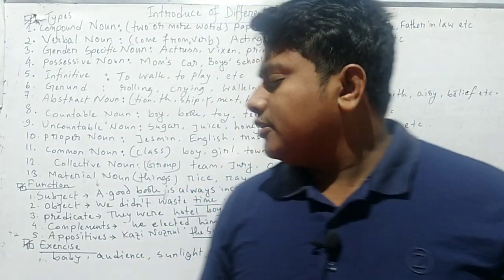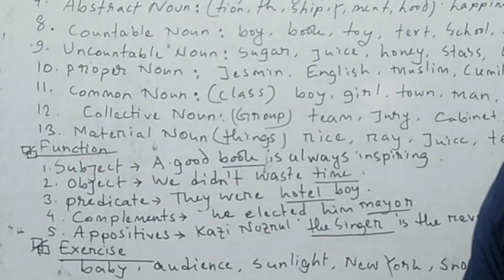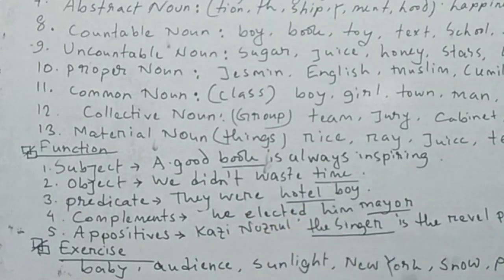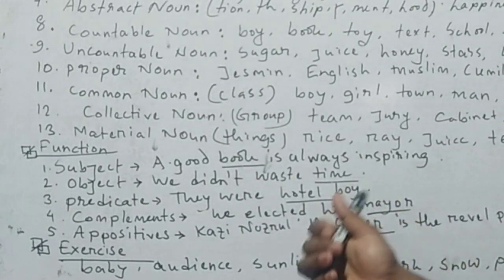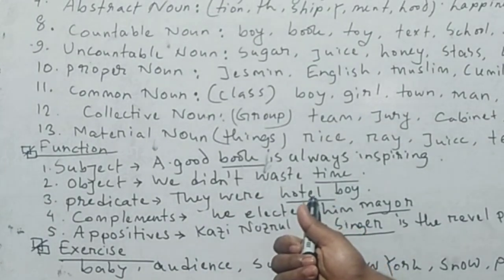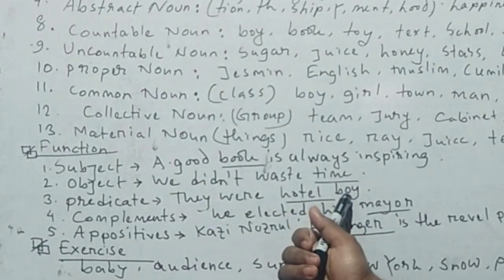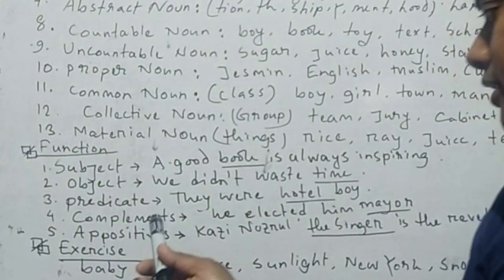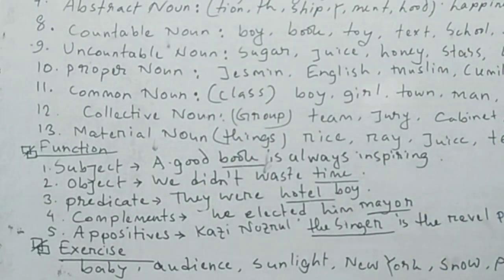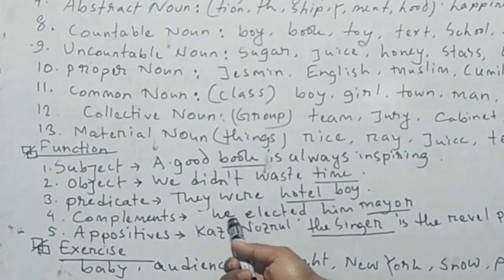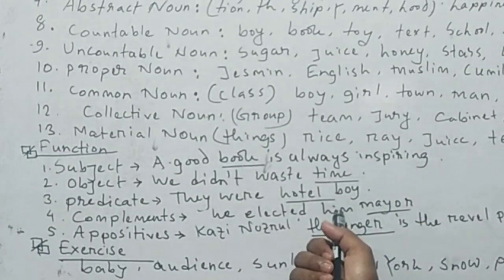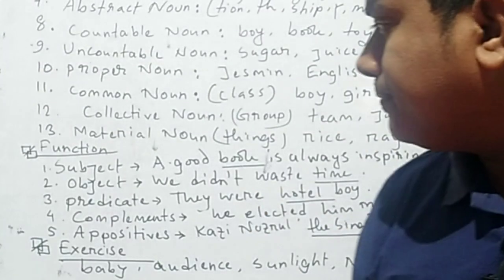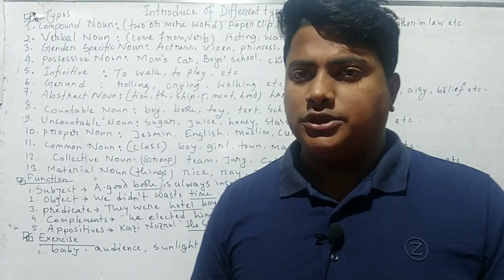Nouns also function as noun adjuncts — two nouns sit together forming one meaning, such as 'hotel boy.' Here 'boy' is a noun and 'hotel' is also a noun, but 'hotel' modifies 'boy,' so 'hotel' acts as a noun adjunct. Another function is complement — a noun acts as complement, for example: 'We elected him mayor.' Here 'him' is the object and 'mayor' completes the meaning.